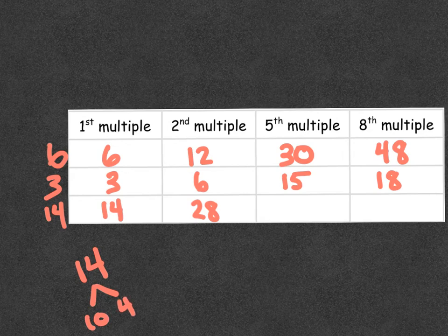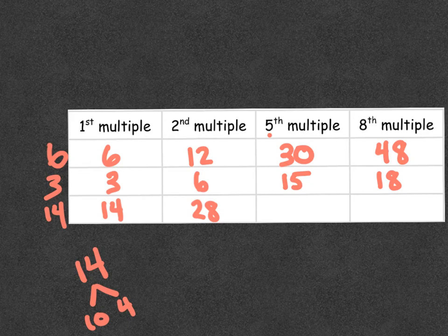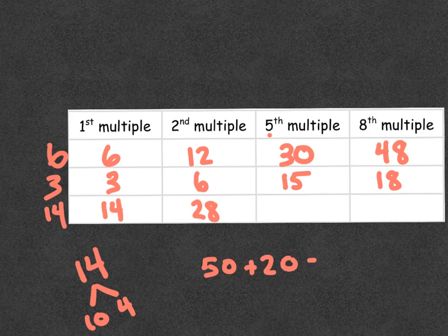So you want to think to yourself, what is five times ten? That's fifty, right? And then what's five times four? That's twenty. So the answer to that, if we add them together, is seventy.